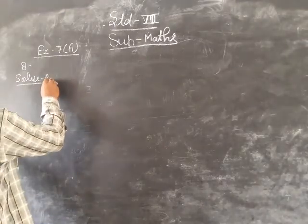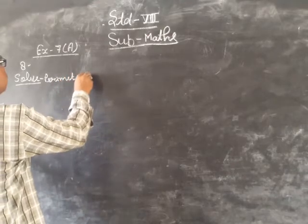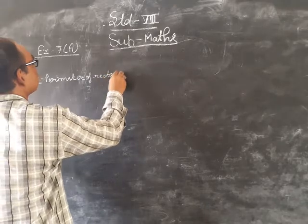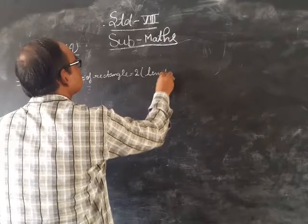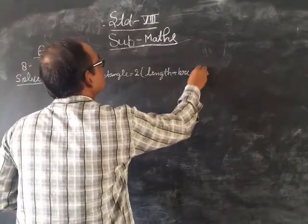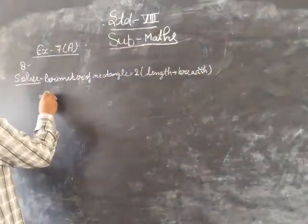So perimeter of rectangle equals to 2 times length plus breadth. For this, 2 is taken out.